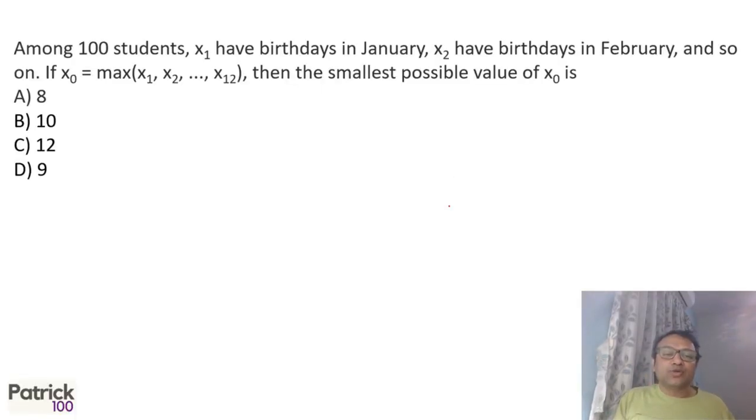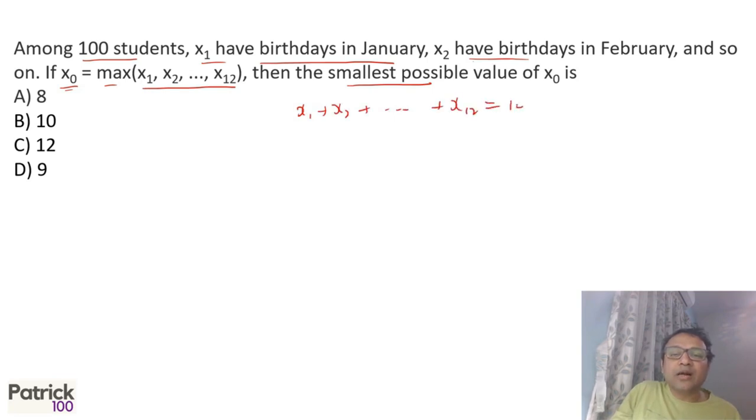So let's look at how to go about having the right methods to solve. Among the hundred students, x₁ students have birthdays in January, x₂ in February, and so on. Find the smallest value of x₀ where x₀ is the maximum of these. The smallest value will be when all the values are equal. We know that the sum x₁ + x₂ + ... + x₁₂ = 100 because there are 100 students.